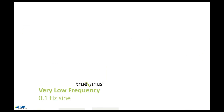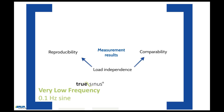Despite the advantages and disadvantages of each of the different testing and diagnostic methods — such as 50 Hz sine, 0.1 Hz sine, DAC, and 0.1 Hz cosine square wave — the 0.1 Hz voltage shape has the decisive advantage of reproducible and comparable measurement results. This is due to its load independence, which can only be achieved by the true sinusoidal 0.1 Hz voltage.